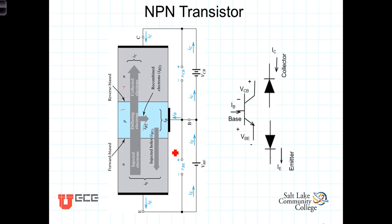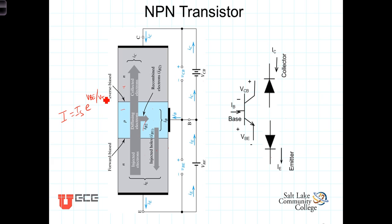As VBE increases — as the voltage from the base to the emitter becomes more positive — more electrons find their way into the base and are swept into the collector. VBE then becomes the controller of the openness of the transistor for current to flow through it. The current flowing through the transistor will be directly related to the current flowing across the base-emitter junction, and it is exponentially dependent upon VBE. We know from our previous study of the PN junction that the current I is equal to I_S times e to the power of VBE divided by V_T, where VBE is the voltage across the junction and V_T is the thermal voltage.